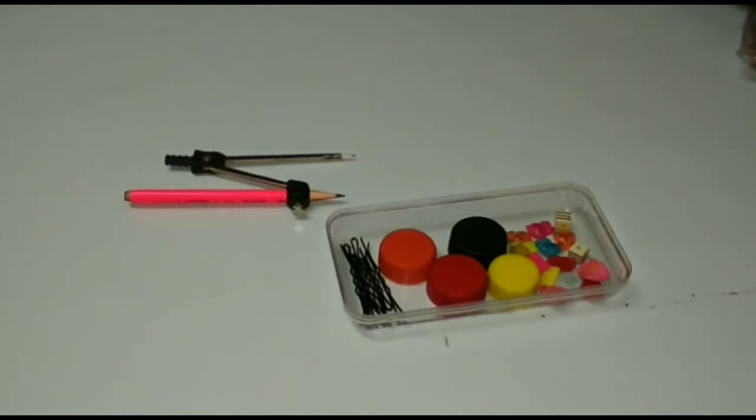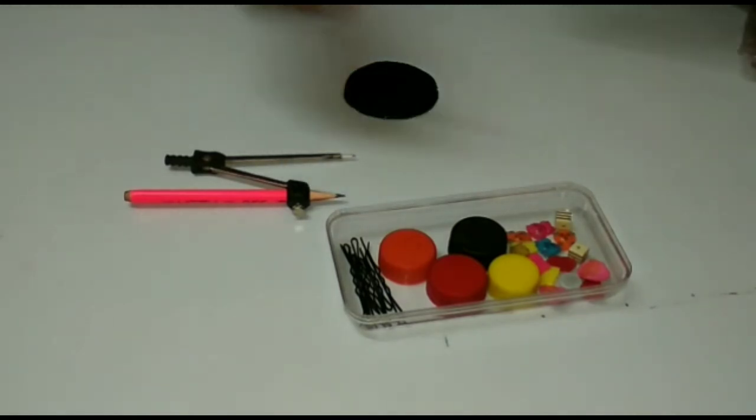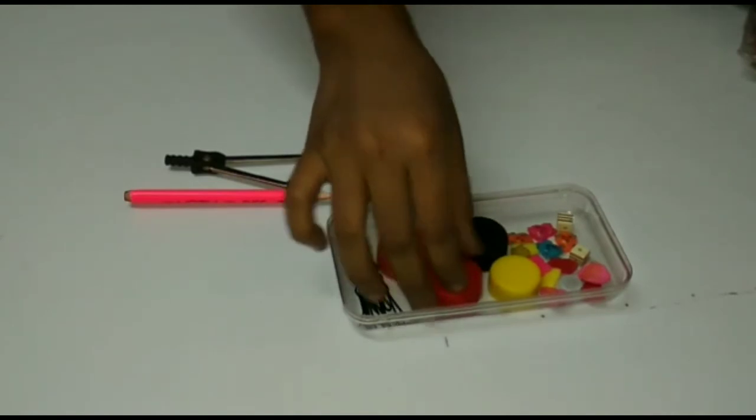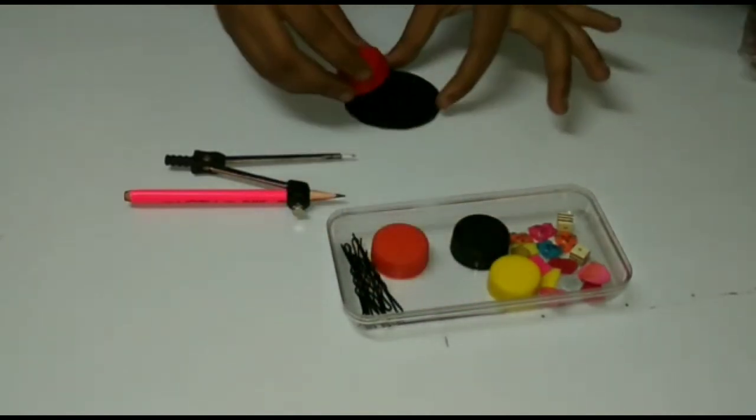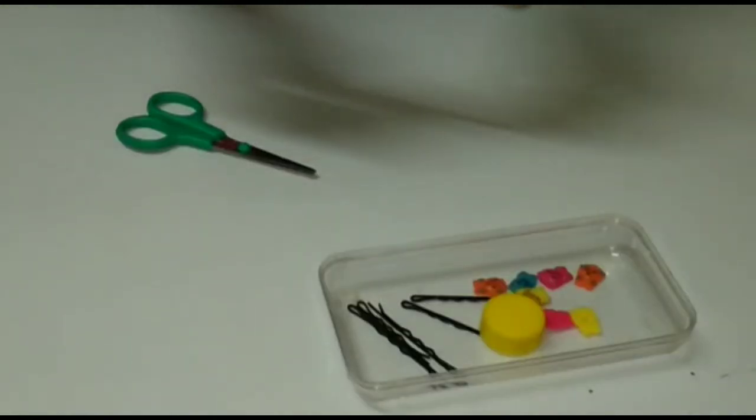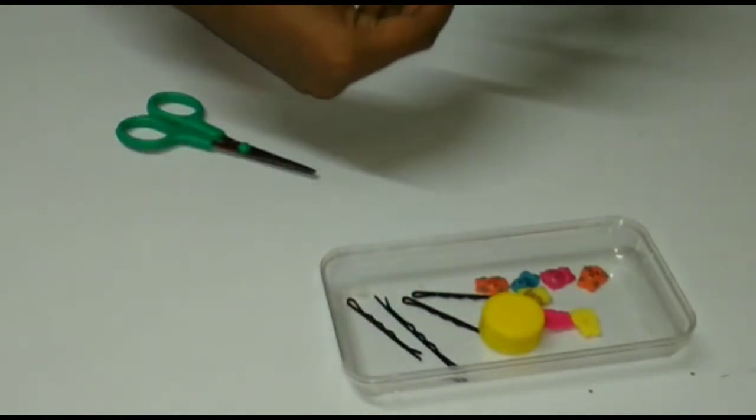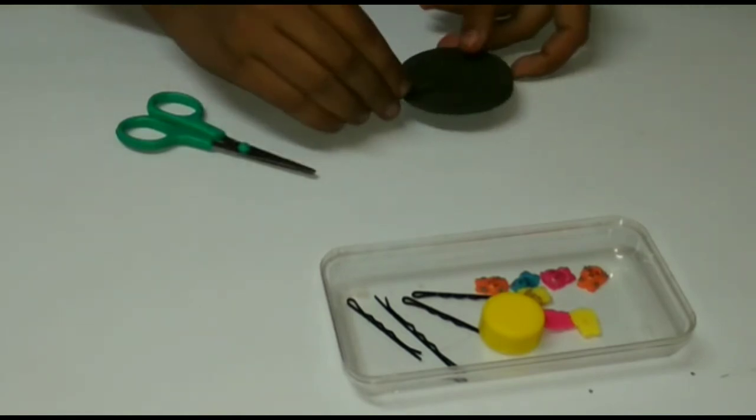After cutting, the circle will look like this. Now take any bottle cap and paste it on the circle like this. Now paste the bobby pin at the back side with the help of glue.